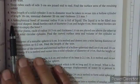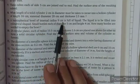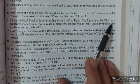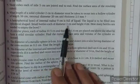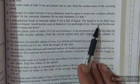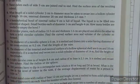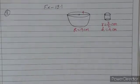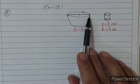Question number 9: A hemispherical bowl of internal radius 9 cm is full of liquid. The liquid is to be filled into cylindrical shaped small bottles each of diameter 3 cm and height 4 cm. How many bottles are needed to empty the bowl? यहाँ पर एक hemispherical bowl है जिसमें liquid भरा हुआ है।